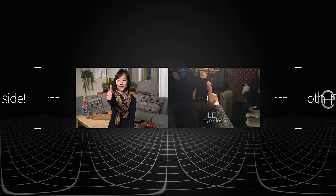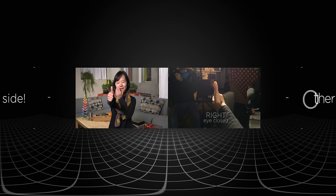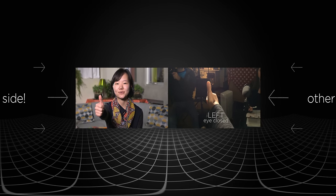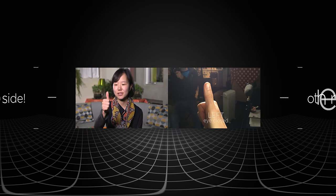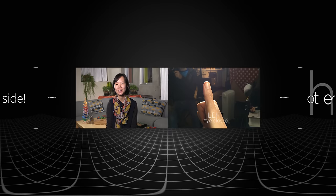Hold out your thumb in front of you and close your left eye. Now try closing your right eye. Do you notice how your thumb jumps a little bit to the left or right when you switch between your eyes? Now bring your thumb a little bit closer to you and do the same thing. It seems to jump even more, right?